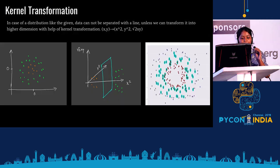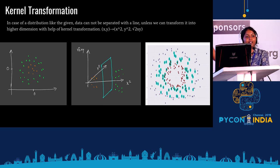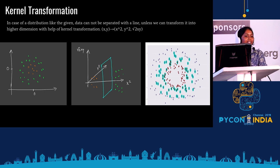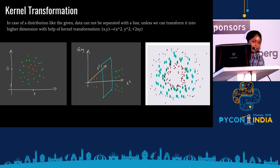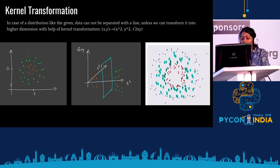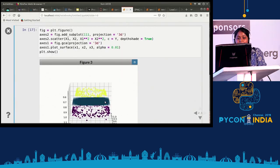Kernel transformation is an important concept. Suppose you have a non-linear dataset in circular form that cannot be separated by a line or plane. Living in a 2D world, the kernel helps project all the 2D data points into a 3D space, where they become linearly separable. So the kernel transforms 2D points into 3D, making it easy to differentiate positives from negatives.